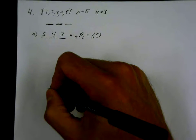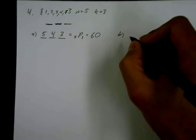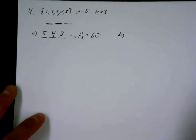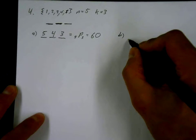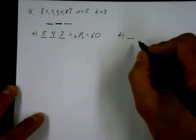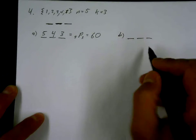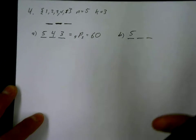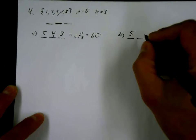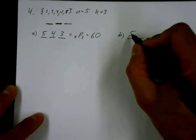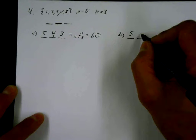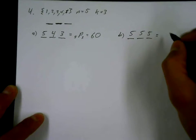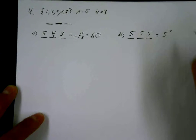Part b: repetition of digits is allowed. This totally changes the question. Now I reach into my bag, drop any one of those five, and they're all still in the bag because repetition is allowed — so if I put a three there, I can still put another three there. So it's five, five, five. This is written as five to the power of three, and 5³ = 125.